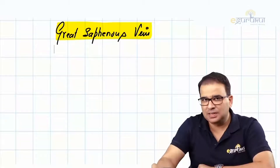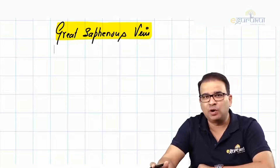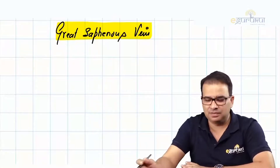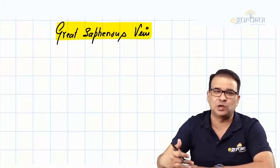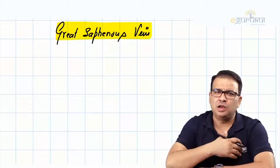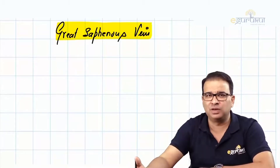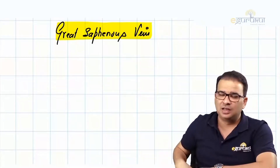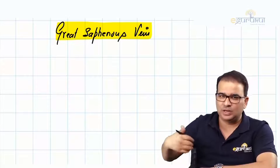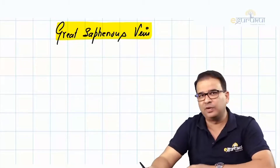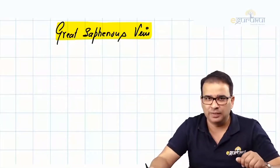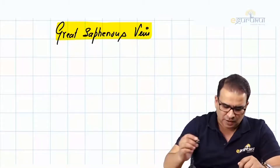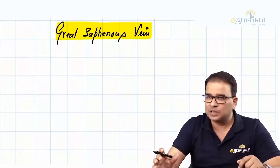Now let's talk about the longest vein in the human body - that is the great saphenous vein. The name is great and the course is also great itself. It's a long vein starting from the dorsum of the foot, and ultimately we saw it in the femoral triangle going through the cribriform fascia and draining into the femoral vein.